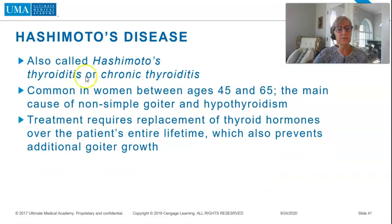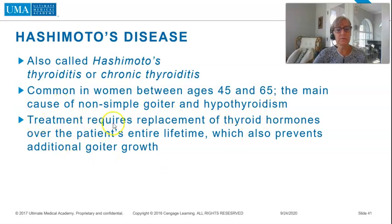Hashimoto's disease, also called Hashimoto's thyroiditis or chronic thyroiditis, is common in women between ages 45 and 65. It is the main cause of non-simple goiter and hypothyroidism. Treatment requires replacement of thyroid hormones over the patient's entire lifetime, which also prevents additional goiter growth.